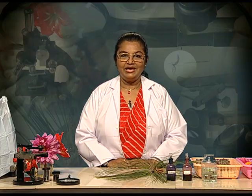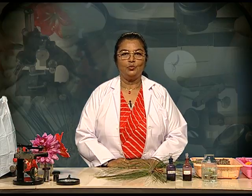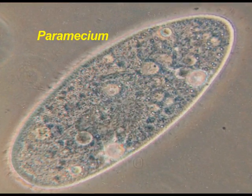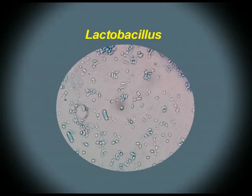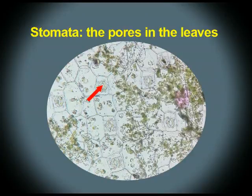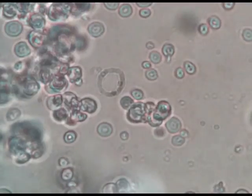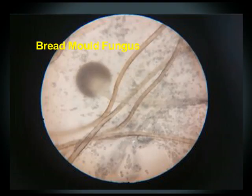Let us take a look at some of the microorganisms and minute structures that we are familiar with. The first one you can see is paramecium moving in pond water. Lactobacillus, a rod-shaped bacteria that is used for making curd. Stomata, the minute pores present in the surface of the leaves for exchange of gases. The deadly-looking claws of a head louse.